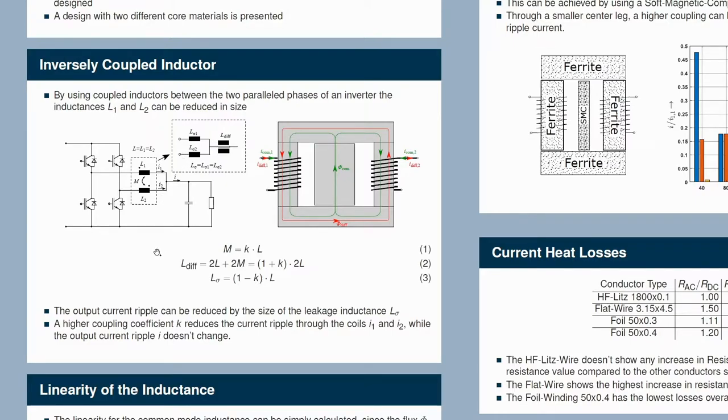And if we change the coupling coefficient and keep the leakage inductance the same, we will change the ripple current through the coils. And I will show this later in this presentation.